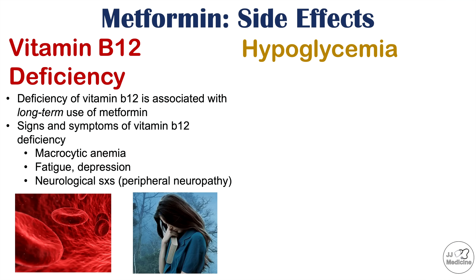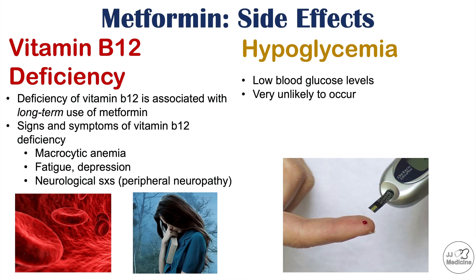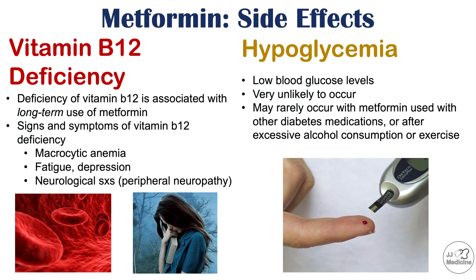A possible but unlikely side effect of metformin is hypoglycemia — low glucose levels. Metformin acts to reduce gluconeogenesis and glucose uptake, and is unlikely to cause severely low blood glucose on its own. However, it could occur in rare circumstances, especially when combined with other diabetes medications, after excessive alcohol consumption, or after exercise. Symptoms of hypoglycemia include blurry vision and fatigue.